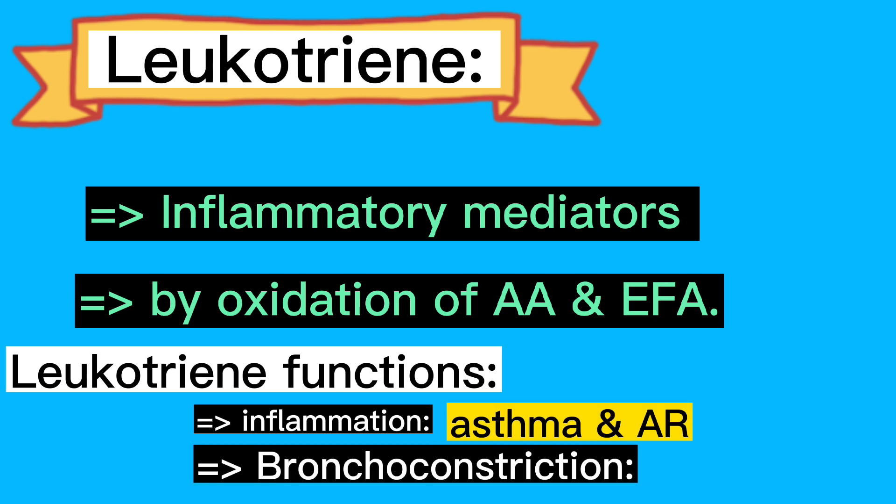...oxidation of arachidonic acid and essential fatty acids. The main functions of leukotrienes are to act on bronchial smooth muscle causing bronchoconstriction, to act on mucus glands to increase mucus production, and to act on blood vessels to increase vascular permeability.